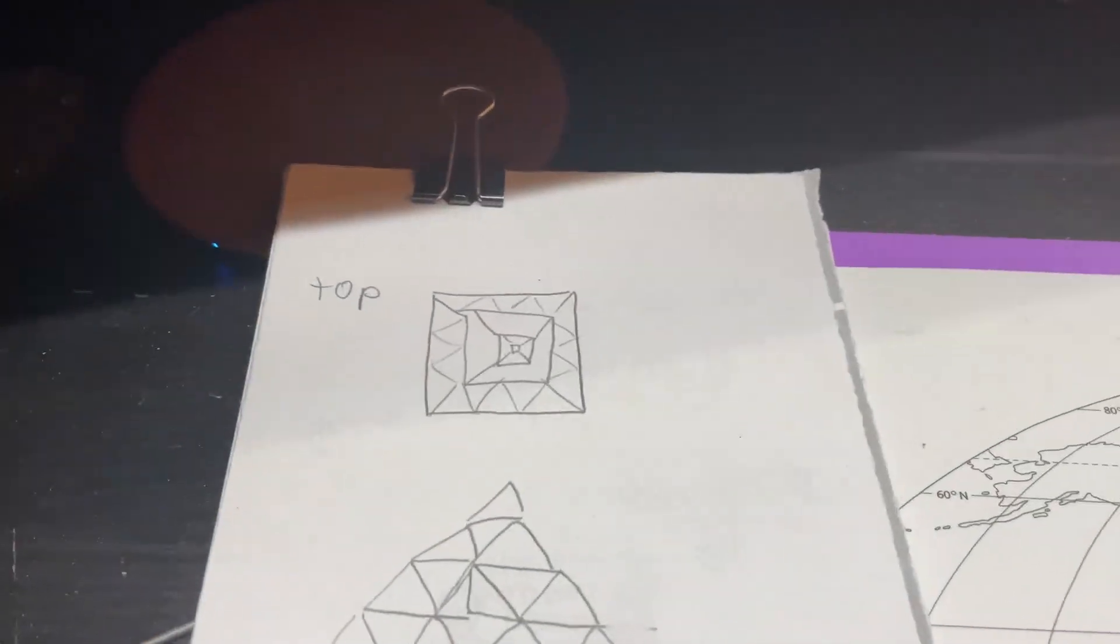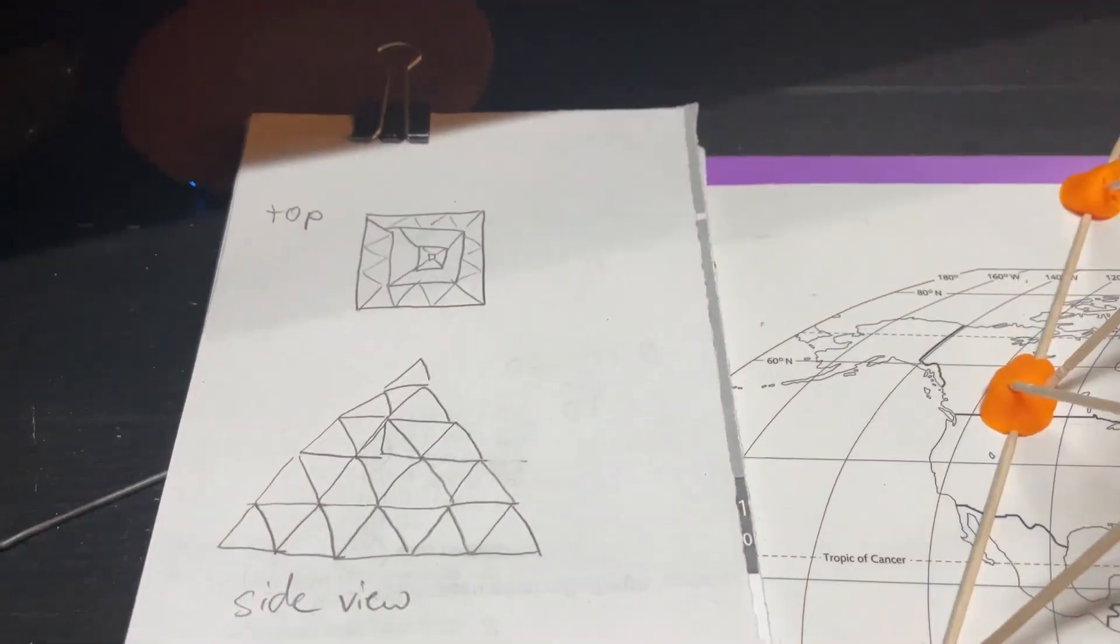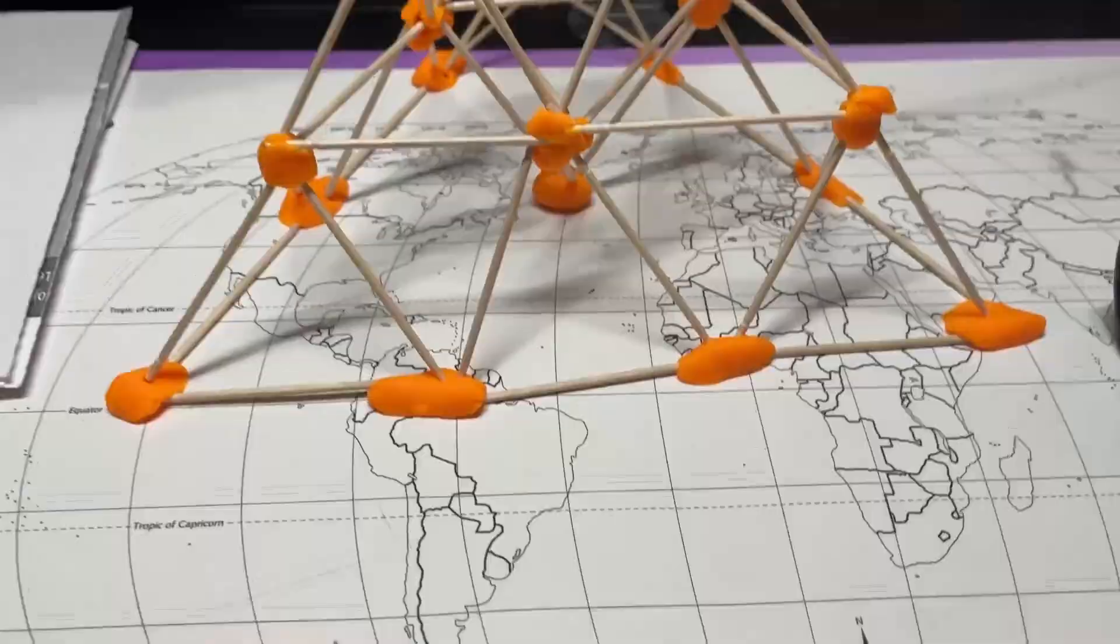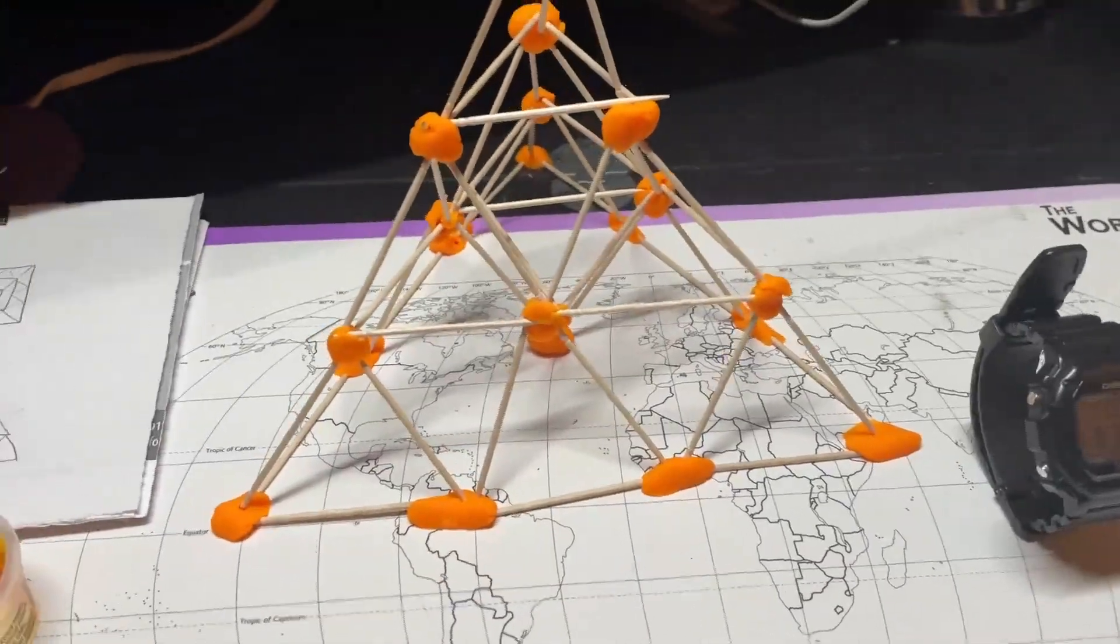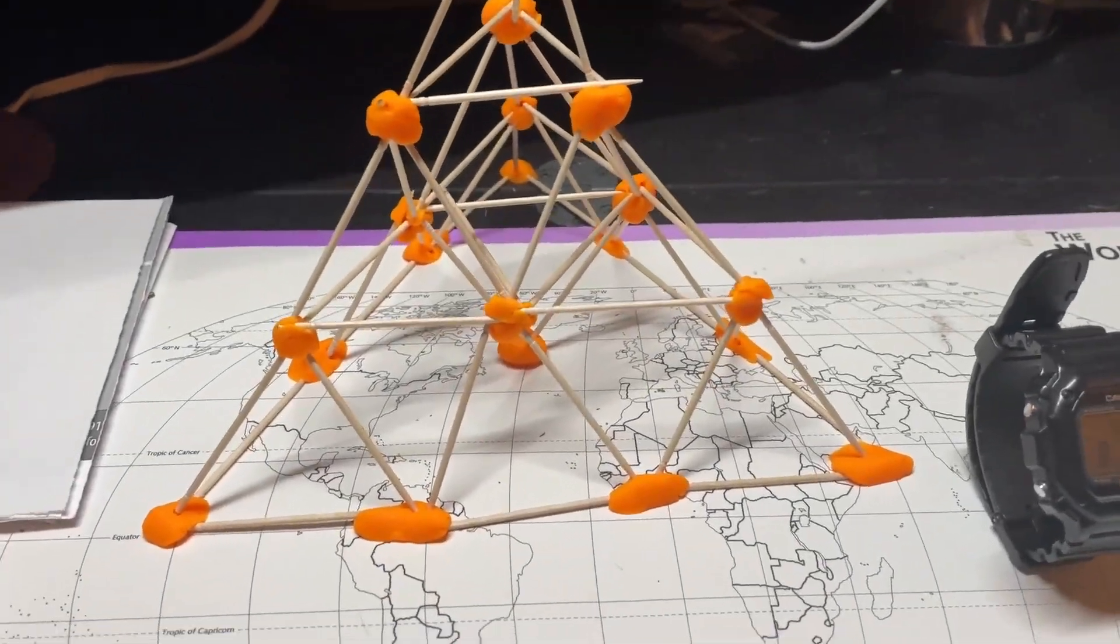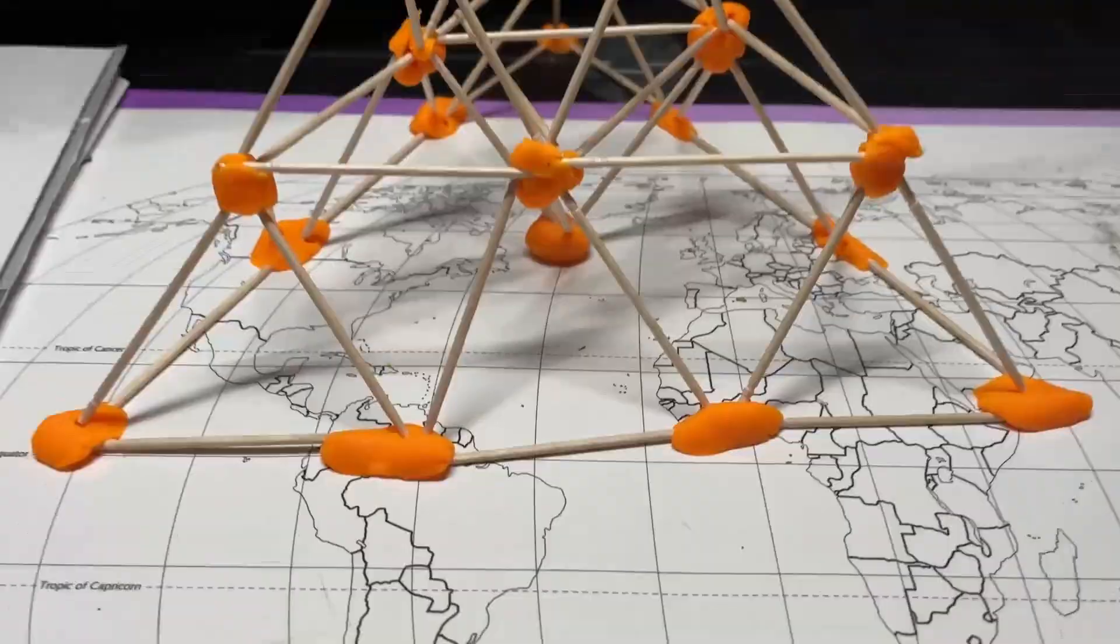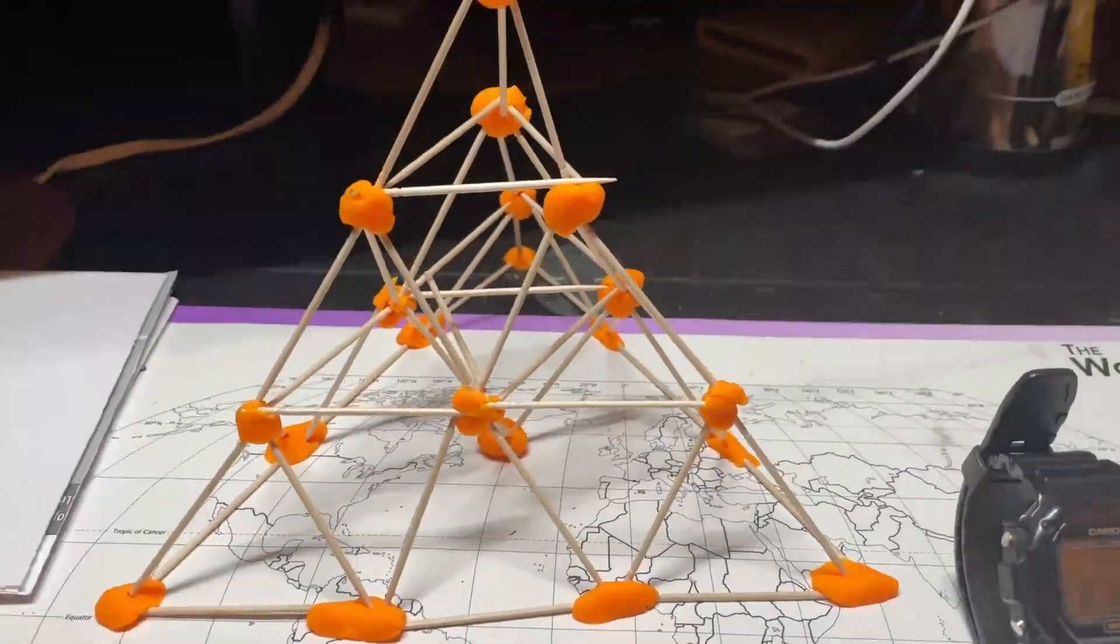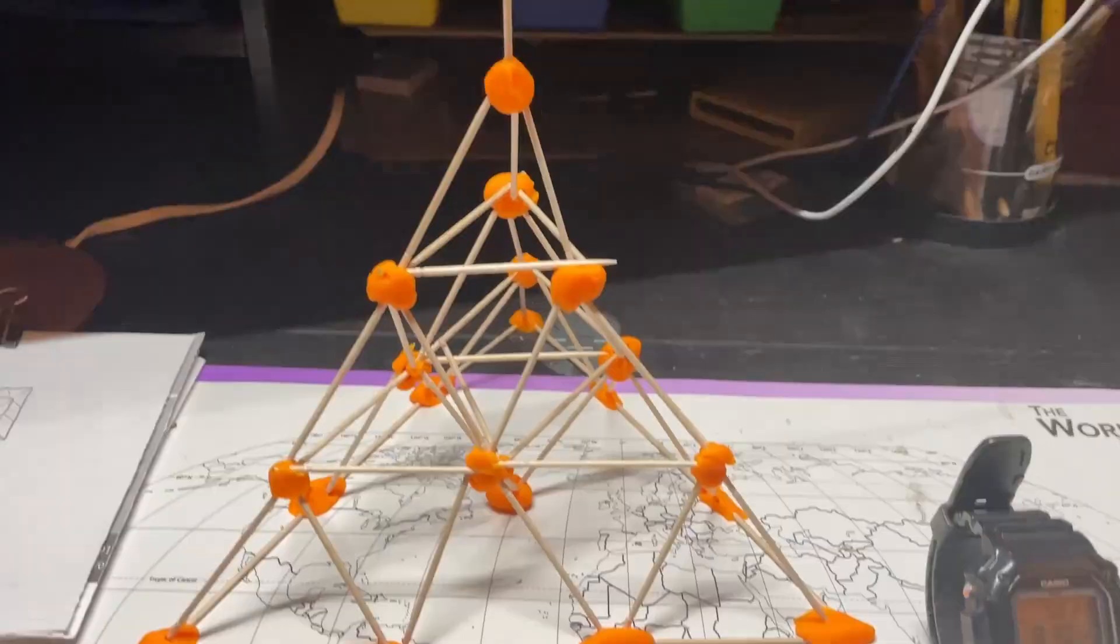Originally I was going to go with a square pyramid structure, but after laying out the base I realized that a triangle would be more than strong enough. I was also pinched for time and kind of improvised, just triangulating all the way up to a pyramid.